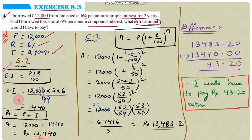Calculating simple interest: SI = principal × time × rate divided by 100. So SI = 12,000 × 2 × 6 divided by 100. After cancellation, 12,000 divided by 100 gives 120, then 120 × 2 × 6 = 1,440. So simple interest is rupees 1,440.